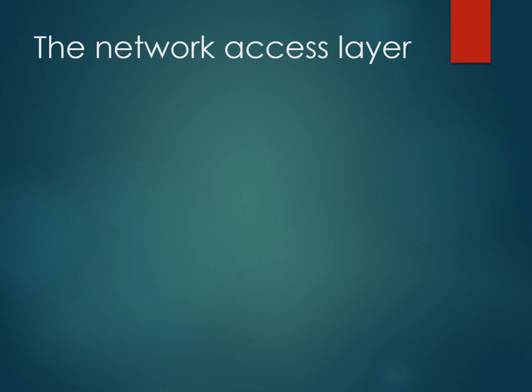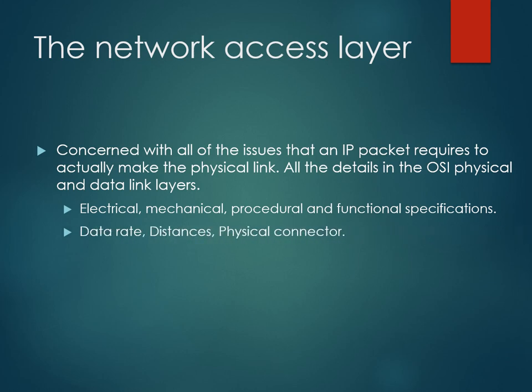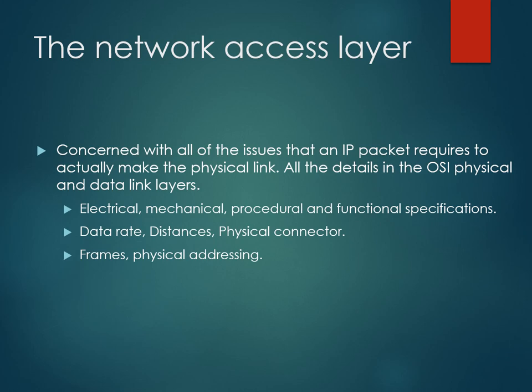The first layer of the TCP/IP model is called the Network Access layer or Internet Access layer. It deals with all issues that IP packets require to be made to the physical link. All details of the OSI physical and data link layer — meaning electrical, mechanical, procedural, and functional specifications — are in this layer, including data rate, distance, physical connectivity, framing, and physical addressing.